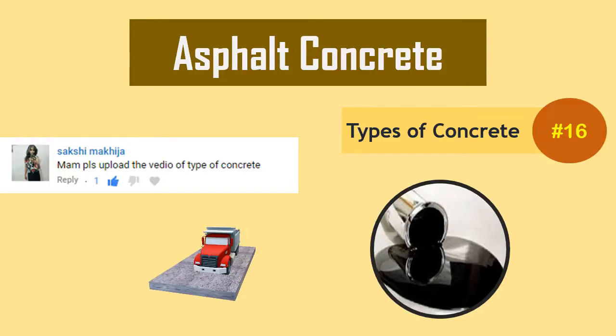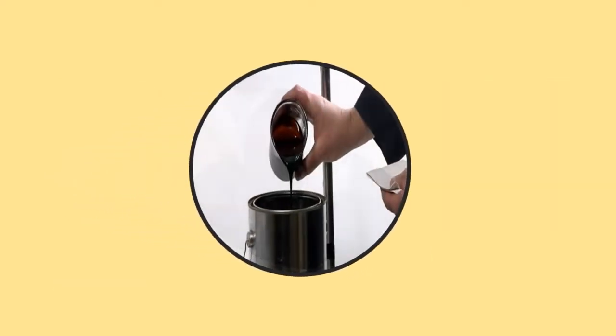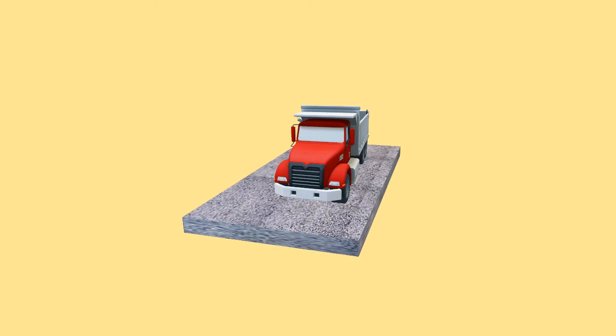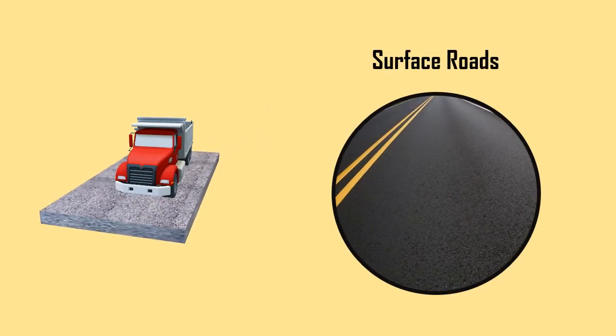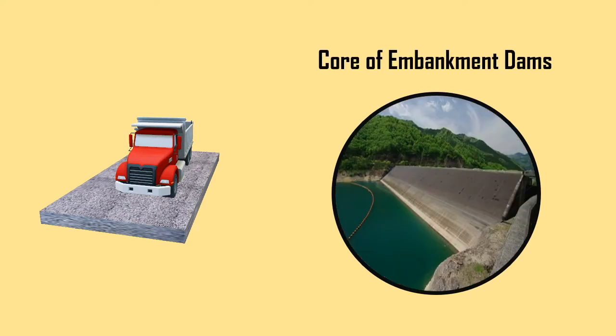Asphalt Concrete is a type of concrete in which the cement is replaced by asphalt, a dark, sticky substance derived from crude oil. Asphalt Concrete is commonly used in the construction of surface roads, parking lots, airport roads, as well as the core of embankment dams.